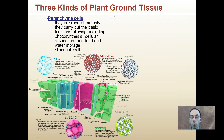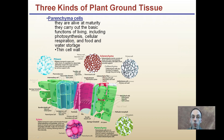There are three kinds of plant ground tissues. Breaking that down further, parenchyma cells are alive at maturity, and they carry out the basic functions of living, including photosynthesis, cellular respiration, and food and water storage. They have a very thin cell wall. These are unspecialized cells that carry out most of the plant's metabolism.